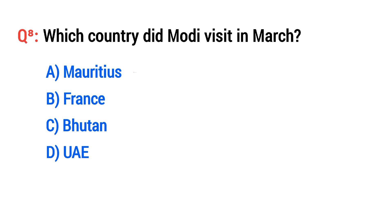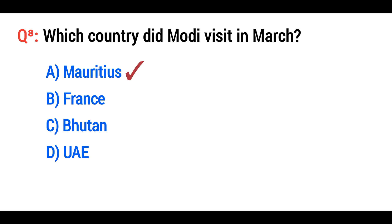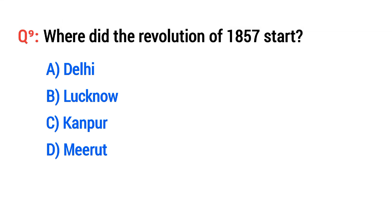The right option is A: Mauritius. Question number nine: Where did the Revolution of 1857 start?